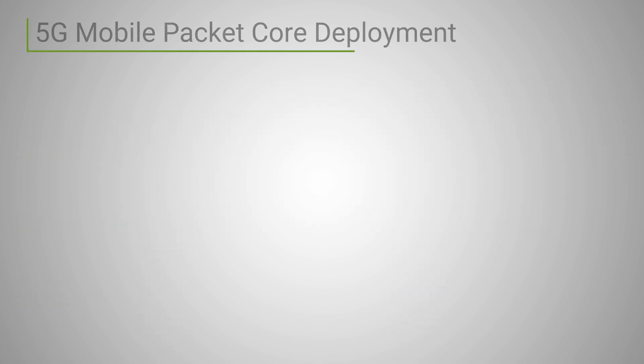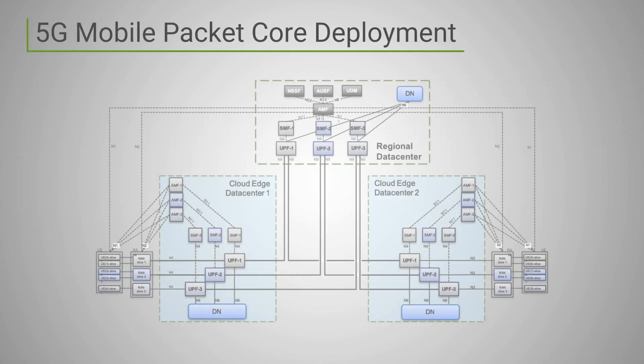Logical UPF entities are expected to be deployed in both edge and regional data centers. As an example, communication between two connected cars served via the same physical edge data center will remain completely local to that data center.